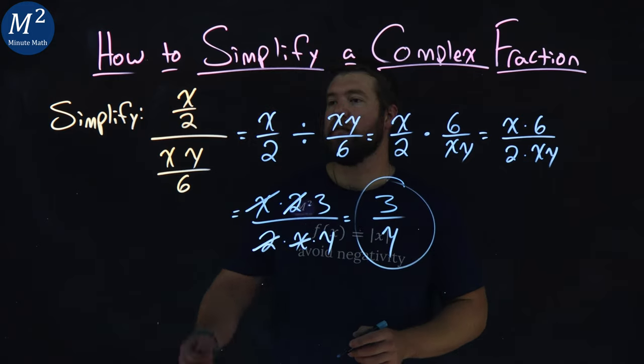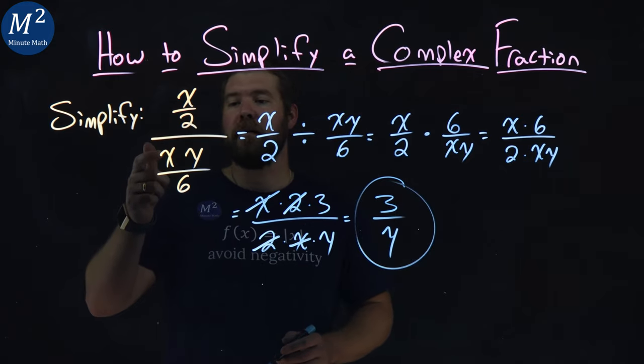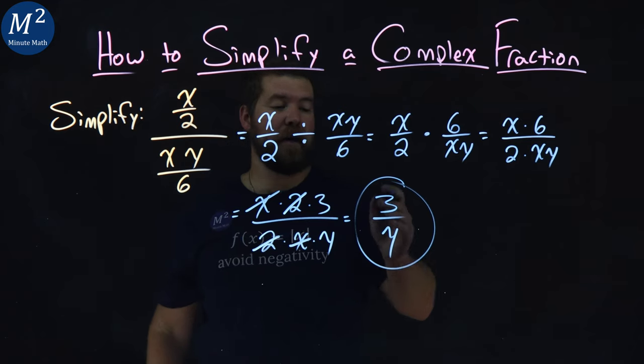And there it is. We simplified x over 2 divided by xy over 6, and we got 3 over y.